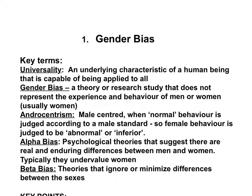Androcentrism simply means male-centred, where normal behaviour is judged according to a male standard, so female behaviour is therefore thought to be abnormal or inferior. Alpha bias means those theories in psychology that say there are real and enduring differences between men and women that we cannot ignore — and these typically tend to undervalue females. Beta bias is the opposite: these are theories that ignore or minimise the differences between the sexes and say the differences are not that important.